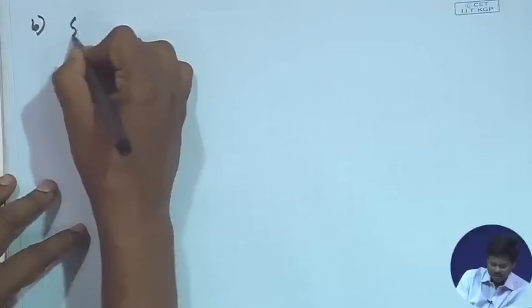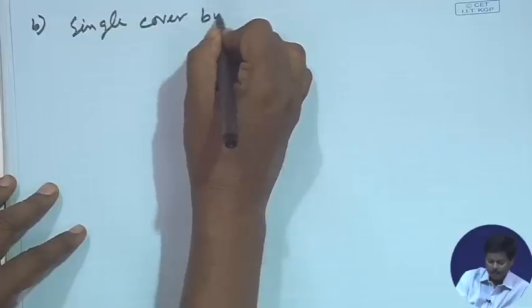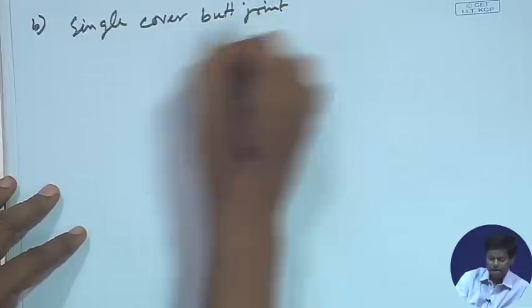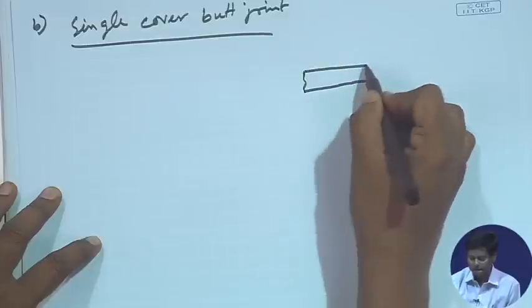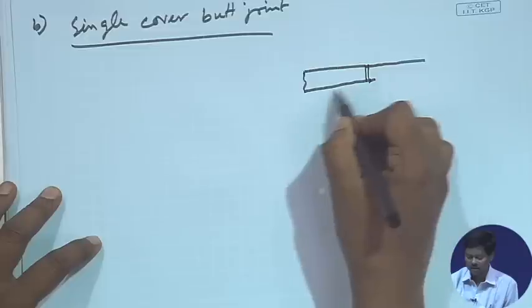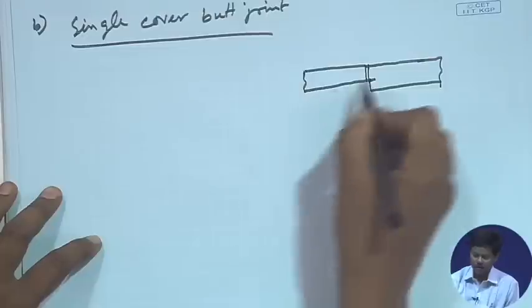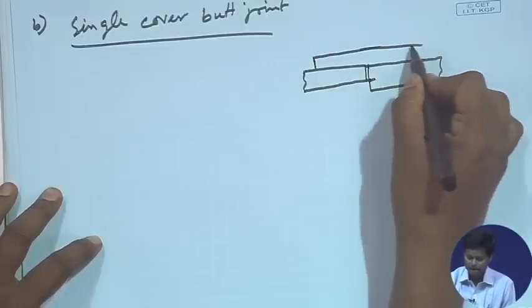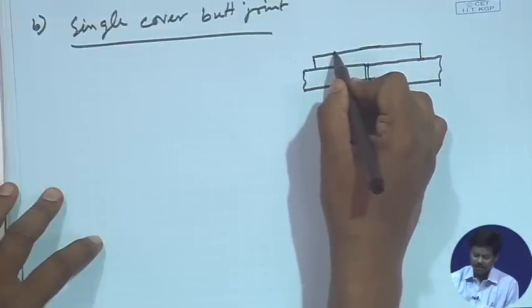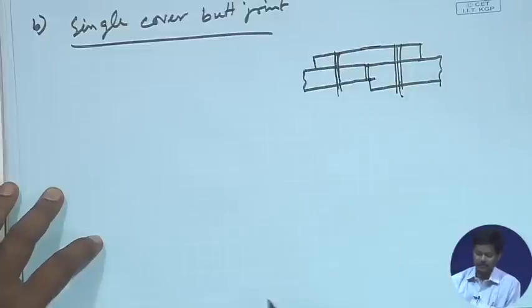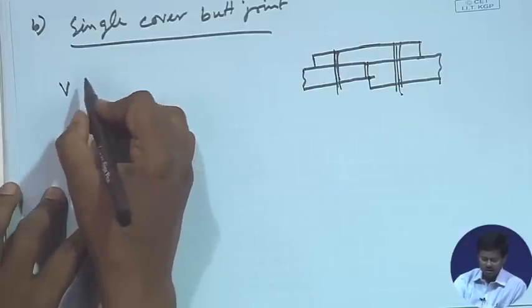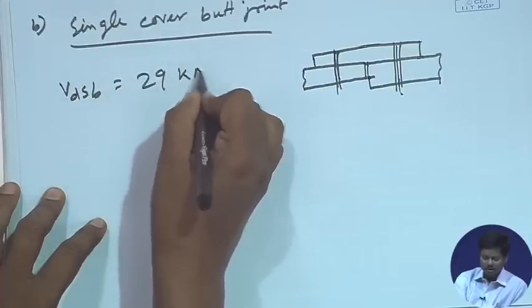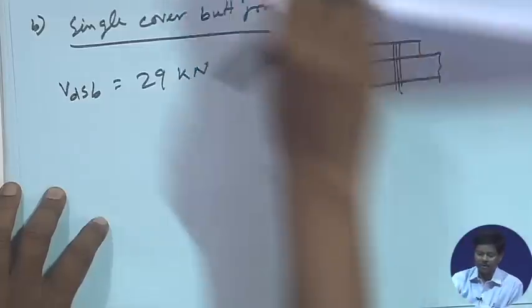For Case B — single cover butt joint — two plates are joined in the same axis with a cover plate. This is also in single shear, so the design shear strength V_dsb is again 29 kilo Newton. We now calculate V_dpb for this configuration.